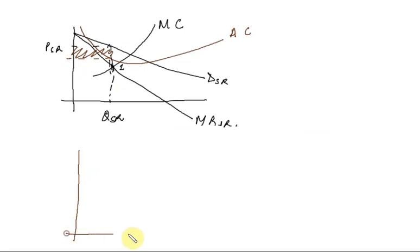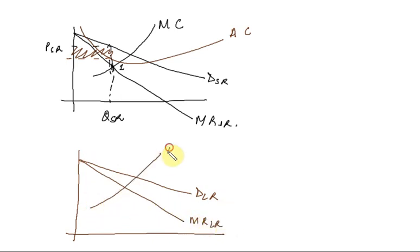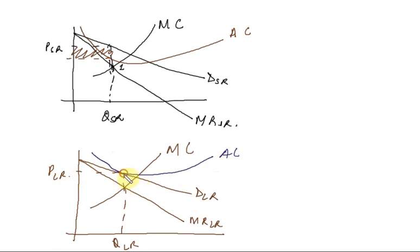In the long run, we have a long-run demand curve, a long-run MR, and a long-run MC. Equilibrium occurs where MR equals MC, giving us quantity Q_LR and price P_LR. Now the AC curve will be tangent to the demand curve, which means revenue equals cost. Since normal profit is already included in cost, at this equilibrium the firm earns only normal profit. So in the long run, the firm always and only earns normal profit.